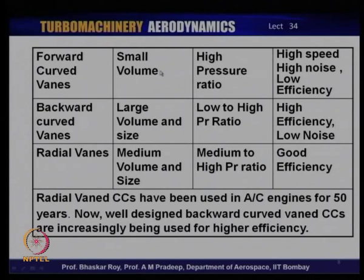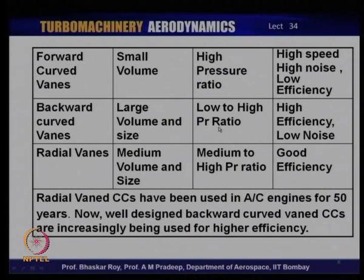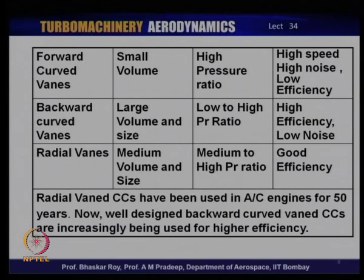Backward-curved vanes, on the other hand, can normally operate with large mass flow and can accommodate higher sizes. It was originally thought to be of low pressure ratio; however, modern designs can actually increase its pressure ratio to substantially high values. They produce high static pressure at the impeller exit and somewhat low exit velocity — and as a result, low noise, with the static diffuser vanes operating at high efficiency. The overall efficiency of the machine is much higher for backward-curved vanes, which is why modern centrifugal compressors are leaning more and more toward backward-curved vanes to produce high-efficiency, low-noise machines.